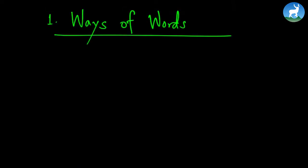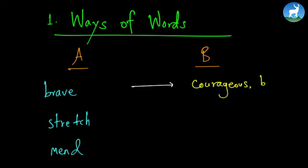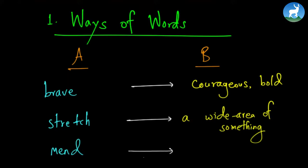First question that we have is called ways with words. In this portion, we are going to match the two columns with each other. We have the word brave followed by stretch and mend. The meaning of brave is courageous or bold. And the meaning of stretch is wide area of something. Now the meaning of mend is repair, so repair or put back together.